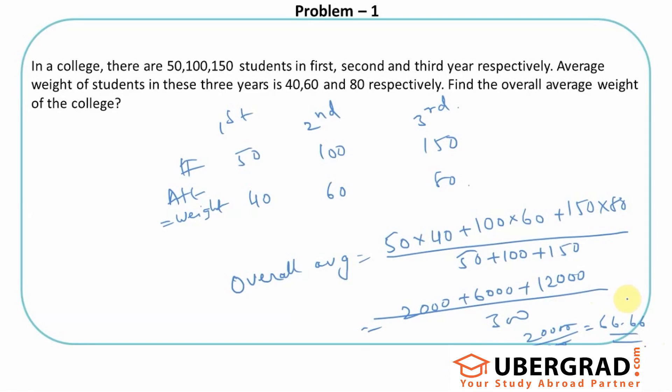So that is going to be 20000 by 300, so approximately 66.66, and that's the overall average of the class. That's how we'll solve it. We just wanted to show that it's not necessary that we can only apply this weighted average for two groups, it can be more than two as well, and this is a good example to understand that.